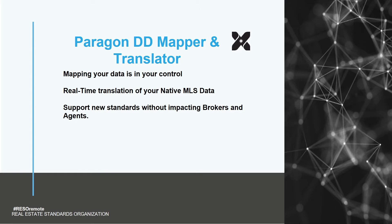If you have a field named 'type of fence' but Data Dictionary requires 'fence type,' then that data can be easily mapped accordingly. Formulas can be used to split or combine data fields — if bathrooms were stored in a decimal format where full and partial baths were in one field, this tool can split that field and map the data to two separate integer fields: total and partial. You are able to map 100% of your native data so none of your local fields will be missing from your feeds. You can also store an unlimited number of mappings that can be easily copied from one to another. If you had just completed your Data Dictionary 1.6 mapping and 1.7 was just released, you can easily copy all the pertaining fields over and get a good head start.